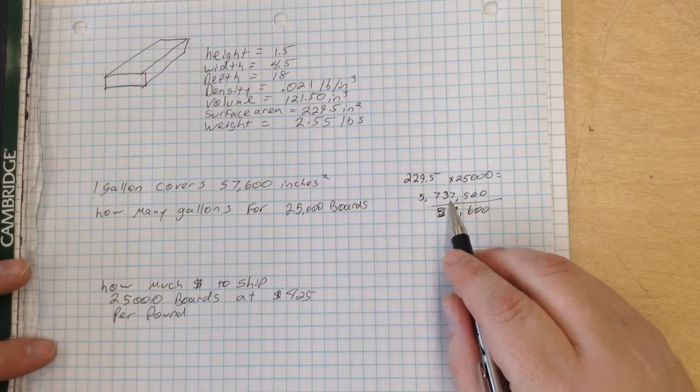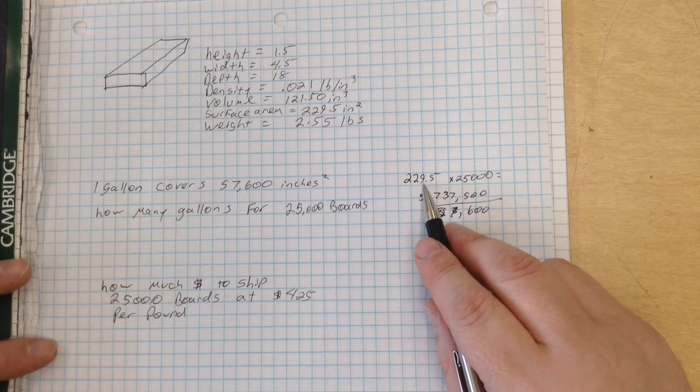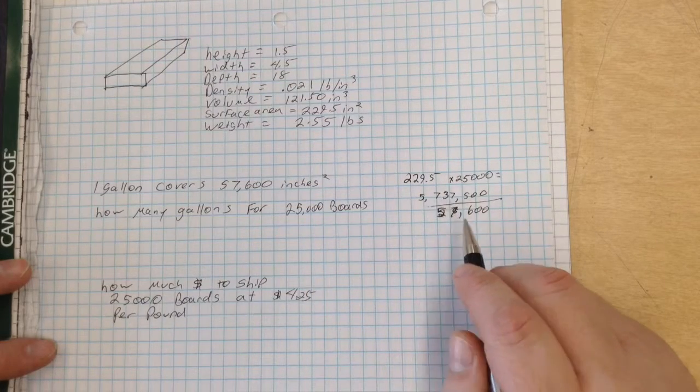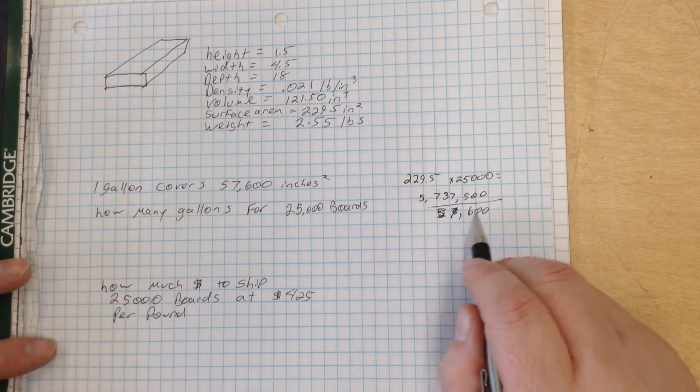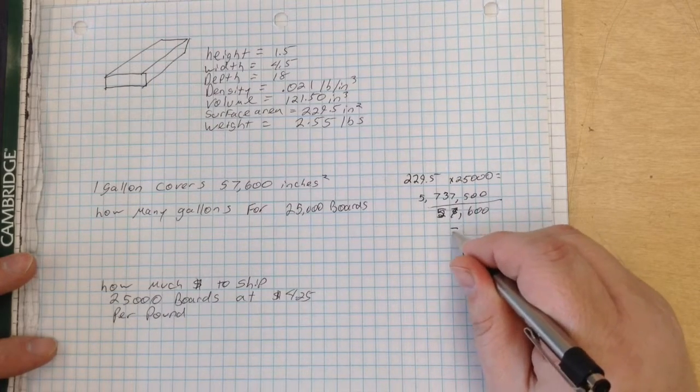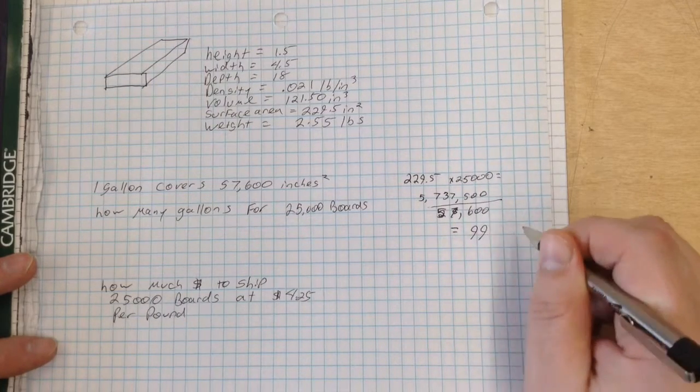So 5,737,500, which is surface area times 25,000 boards, and the answer to that divided by how many square inches a gallon covers. And when we do that, we're given the number 99.